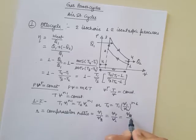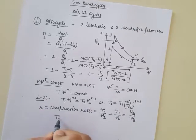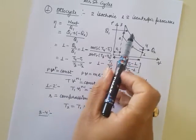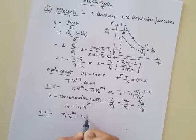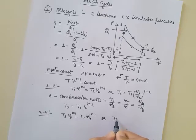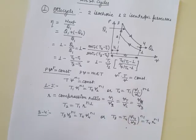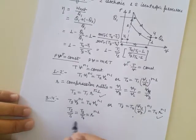V1 is the same as V4, so V1/V2 = V4/V3 = r. Therefore T2 = T1·r^(γ-1). Now for process 3→4, which is again an isentropic process: T3·V3^(γ-1) = T4·V4^(γ-1), giving T3 = T4·(V4/V3)^(γ-1) = T4·r^(γ-1). Comparing the two results, T2/T1 = T3/T4 = r^(γ-1).